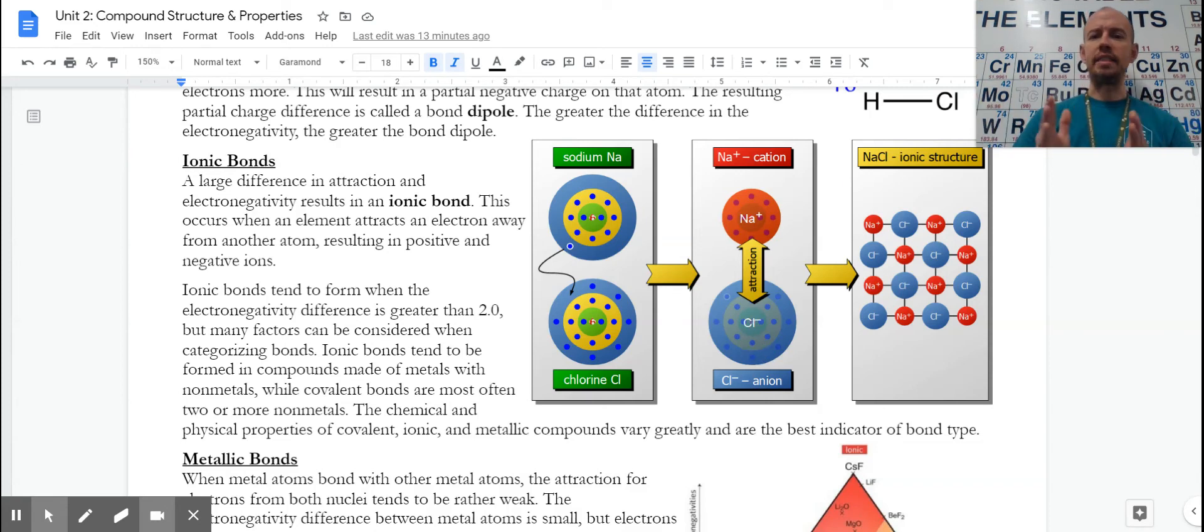And really drawing that line, that 2.0, sometimes an ionic might be right on that borderline, even slightly less than two. But when we have a metal with a nonmetal, we look at the properties. And if the properties match up with other ionic properties, we would consider that to be an ionic bond.